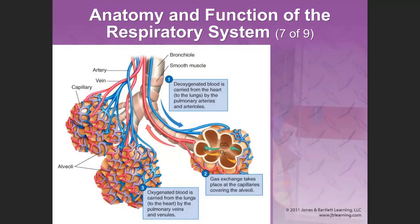This diagram shows the pulmonary capillaries wrapped around the alveoli. The red vessels represent oxygenated blood, and the blue ones represent deoxygenated blood.